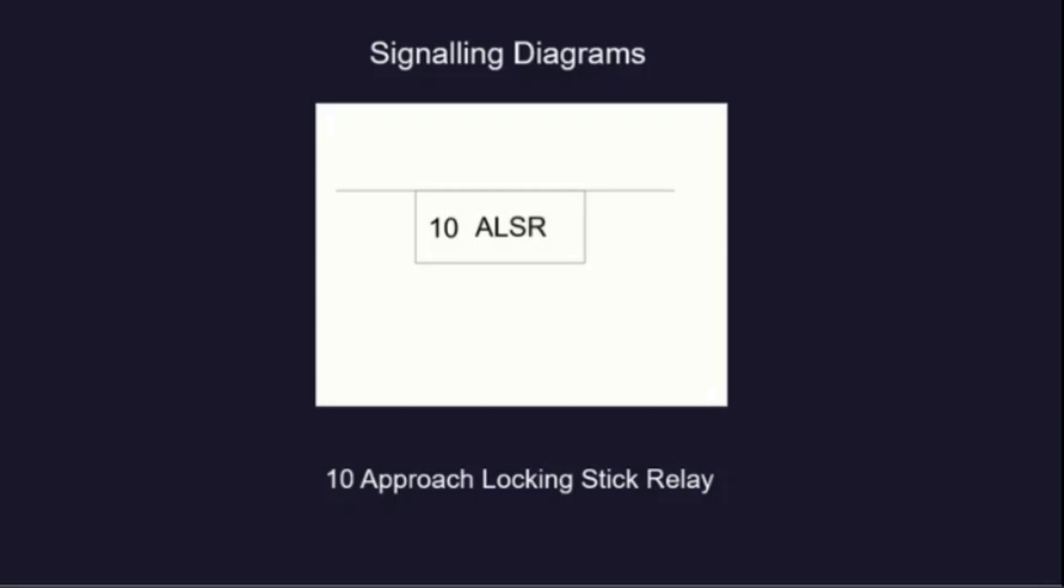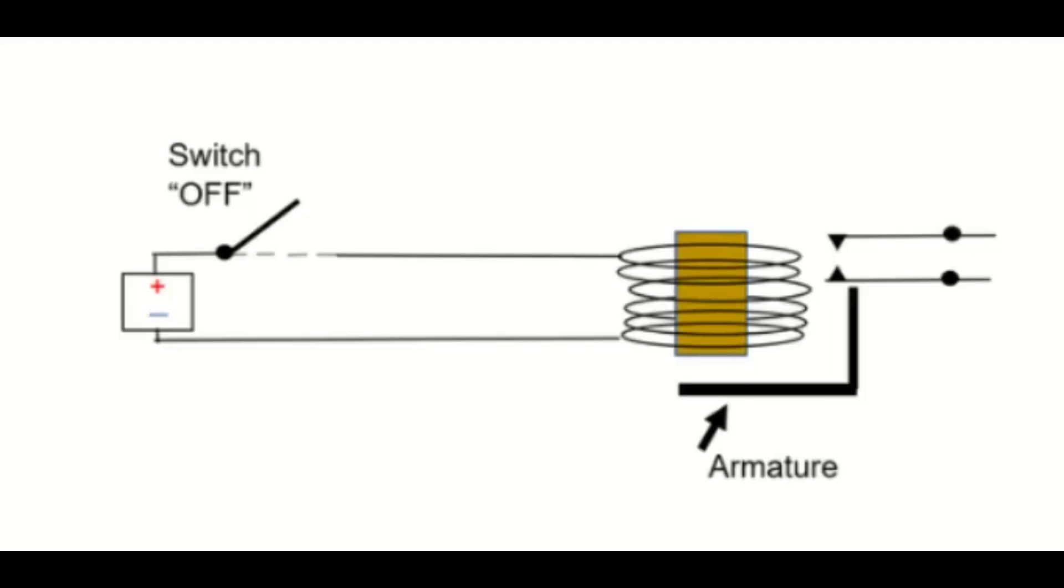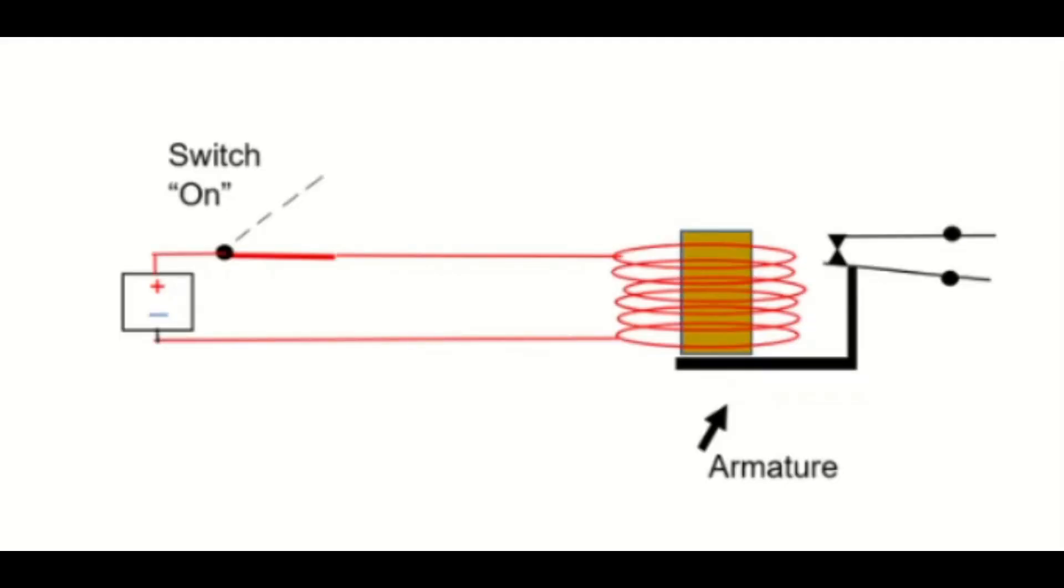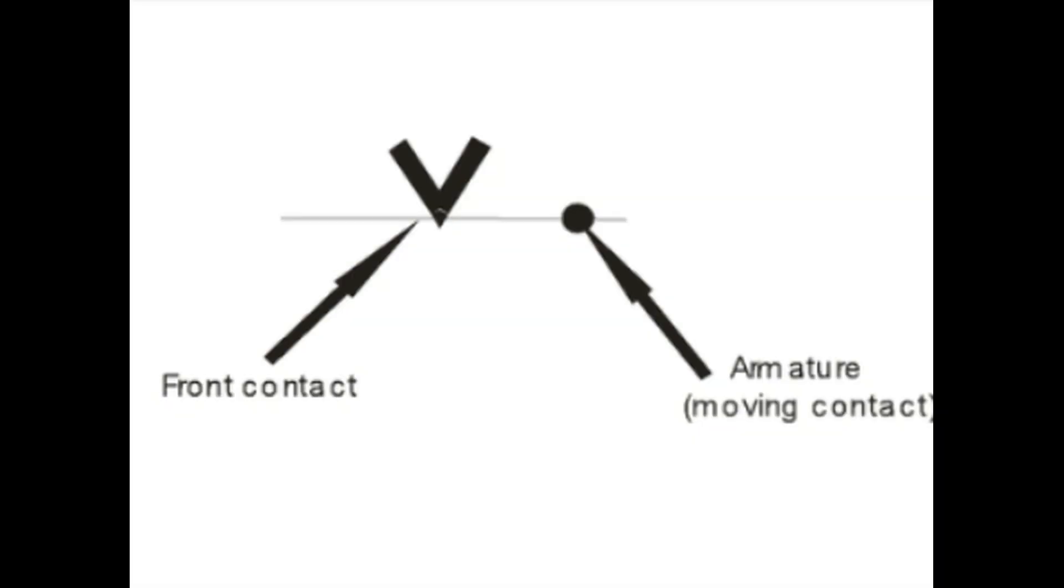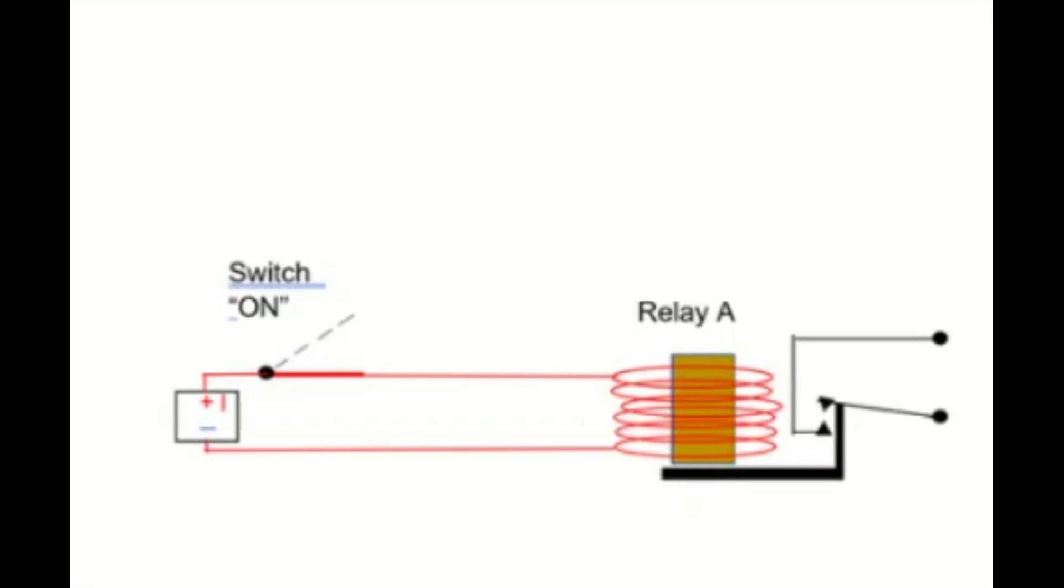However, there are many styles of relay with different functions and operations. Starting from basic electricity and magnetism and the electromagnet, we introduce the working of the relay. This includes the armature, operation of the front contact, how this is shown on the diagram, and the same for the back contact.